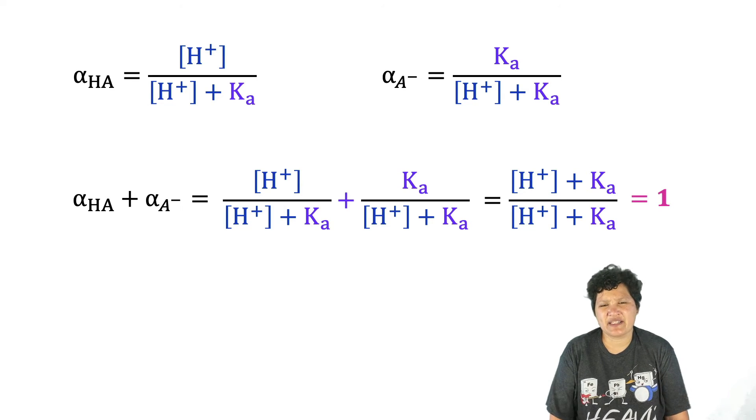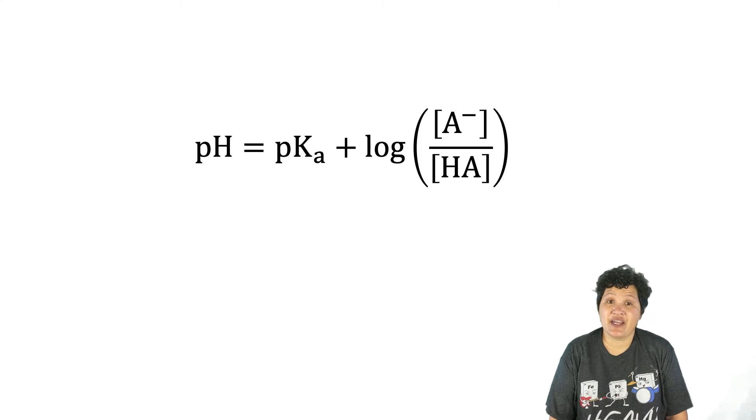Now, when I walked you through that derivation and pulled out the Ka formula, it might have reminded you of a derivation you did with that same formula in Gen Chem, that of the Henderson-Hasselbalch equation. That equation is typically used to calculate the pH of a buffer solution, a solution that contains both a weak acid and its conjugate base. But if you know the pH, you can calculate the ratio of the conjugate base concentration to that of its weak acid. So how is this fractional composition calculation any different?